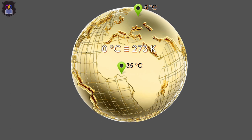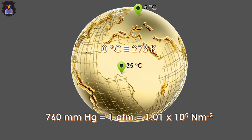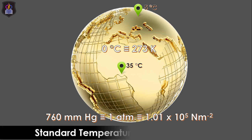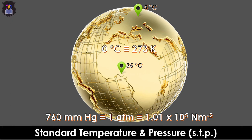In order to avoid this, scientists decided that 0 degrees Celsius (273 Kelvin) be the temperature, and 760 millimeters of mercury, or 1.01 × 10⁵ Newton per meter squared, or 1 atm, be the pressure at which gas volumes are reported or measured. These values when used together are commonly known as Standard Temperature and Pressure, abbreviated as STP.